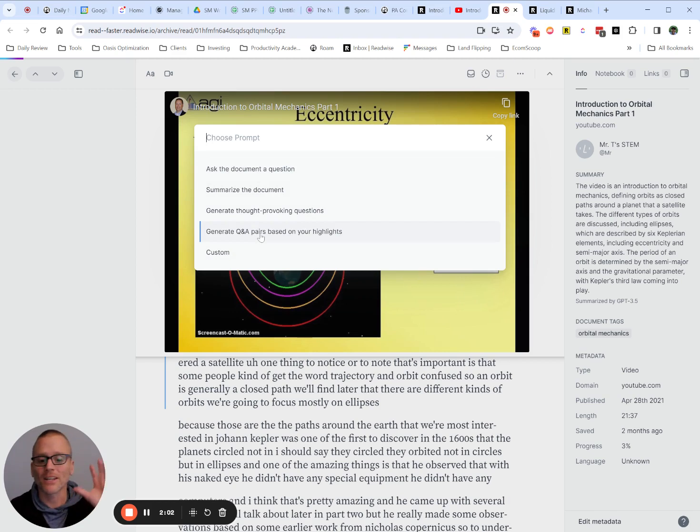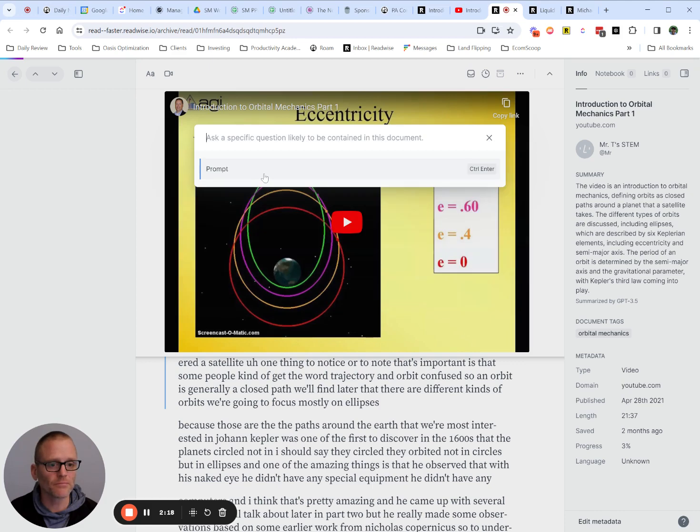And then also custom. I'm not going to go into the details on that just to say that there's ways that you can customize the prompt that you send. And maybe there's something you want to do that's not one of these four things, then you can put together your own prompt that does that. But let's ask the document a question. Let's see. What is the basic idea behind orbital mechanics?